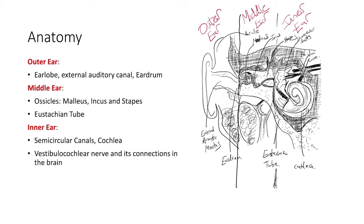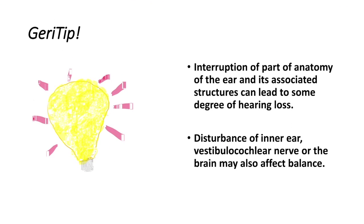The inner ear consists of the semicircular canals, the cochlea, the vestibulocochlear nerve, and its connections in the brain. Today's Jerry tip is that interruption of any of these structures in the outer, middle, or inner ear can lead to some degree of hearing loss, so protect those structures as much as possible.